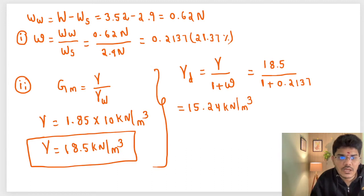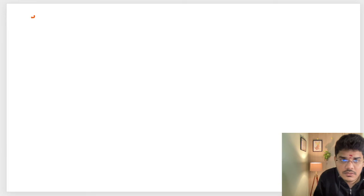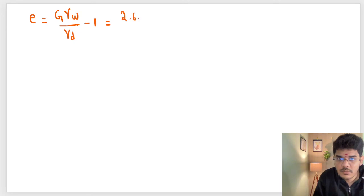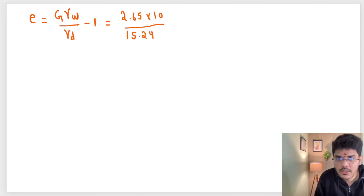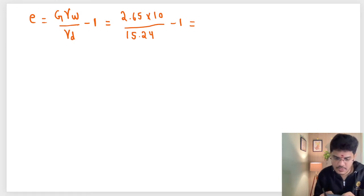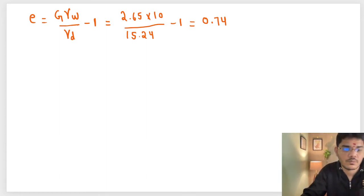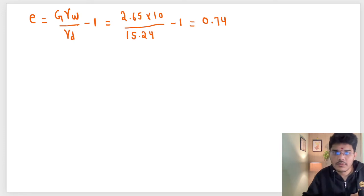Now e can be calculated using the formula e equals Gs times gamma-w divided by gamma-d, minus 1. So e equals 2.65 times 10 divided by 15.24, minus 1, which gives approximately 0.738, so we can consider e equal to 0.74.